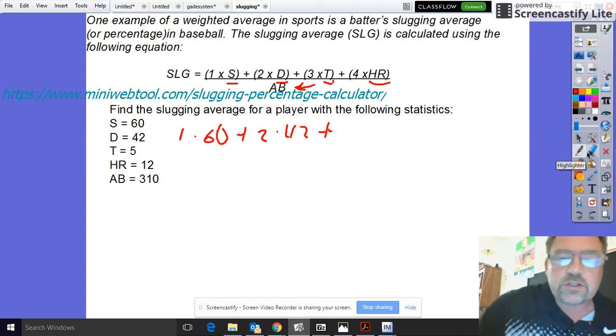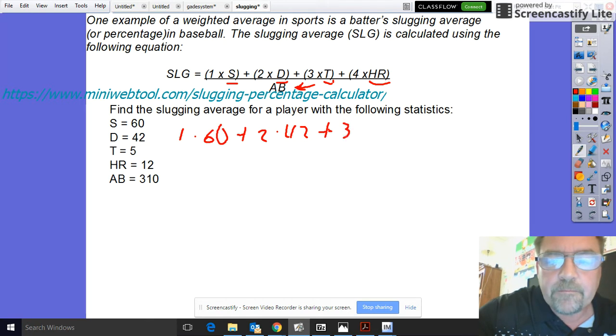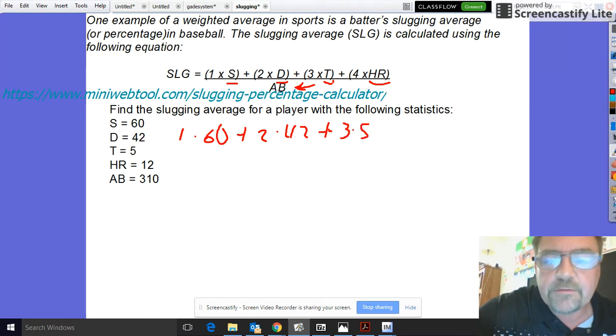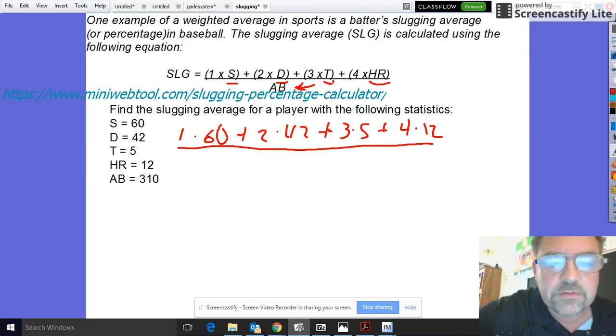So 3 times 5 and 4 times 12, all divided by the at-bats which is 310.